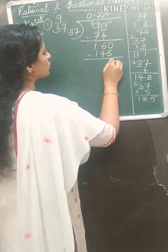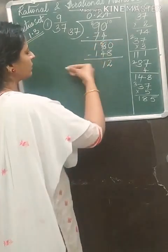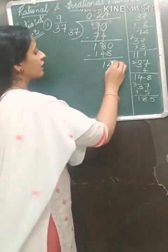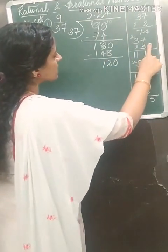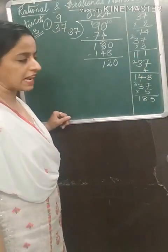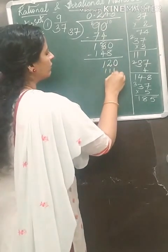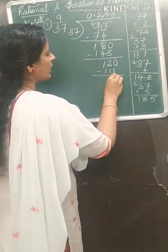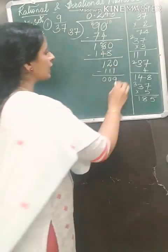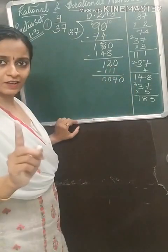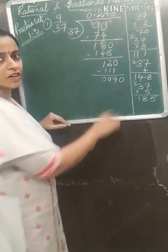Subtract 160 minus 148: 10 minus 8 is 2, 5 minus 4 is 1, 1 minus 1 is 0, giving remainder 12. Put a 0 to get 120. Now 37 times 3 is 111. Subtract: 10 minus 1 is 9, then 0, 0 — remainder is 9. Put a 0 to get 90. So once again we have started with the first step.